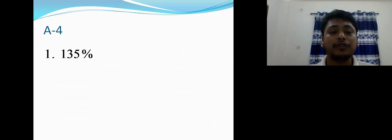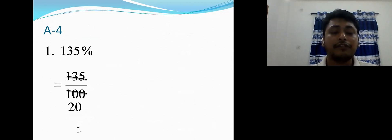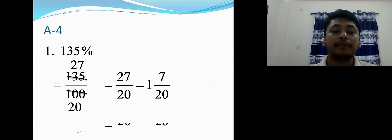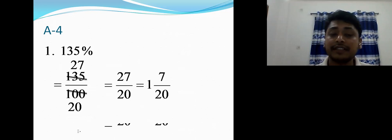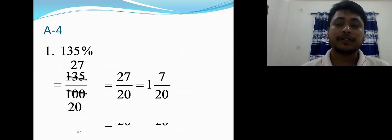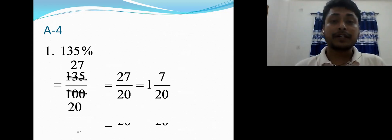Number 4: 135 percent = 135/100. Divide by 5: 135÷5 = 27, and 100÷5 = 20. So 27/20 — cannot reduce further. Since the numerator is bigger than the denominator, convert to mixed number: 27÷20 = 1 remainder 7, so the answer is 1 7/20.